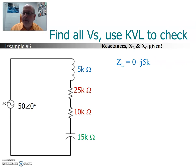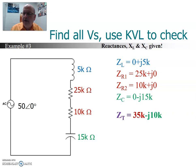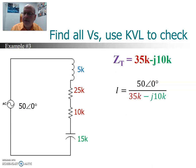So write out the individual Z's. And Z of L is zero plus j 5k. Here's the first resistor, 25k. The second resistor is 10k. Third capacitor here, we have zero minus j 15k. Add everything up, we get 35k minus j 10k. Now we'll find the current using Ohm's law, 50 angle zero divide by our total Z. And what we'll get for the current then is 1.37 and angle of 15.9 milliamps.